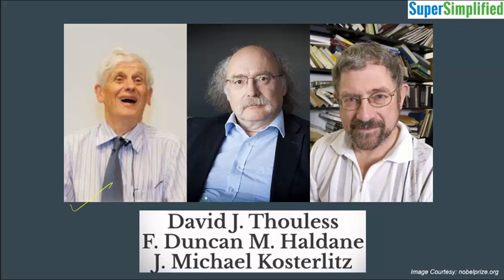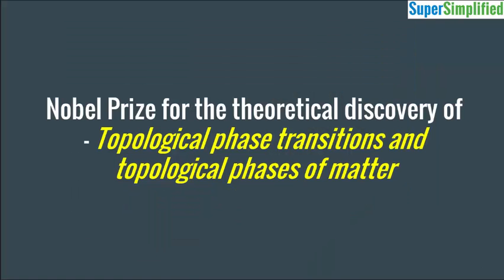These are the three scientists who have received Nobel Prize in Physics for 2016: David, Duncan, and Michael. David will be receiving 50% of the prize amount and the remaining 50% will be distributed between Duncan and Michael. All three of them are UK born and immigrants to the USA.